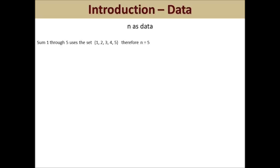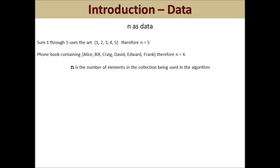It's just a coincidence that N equaled 5 and there are 5 elements, so let's look at another example. If we had a phonebook database full of contact names, our data set may contain Alice, Bill, Craig, David, Edward, and Frank. Therefore, N would equal 6 since we have 6 elements in our database collection. N equates to the number of elements in a set or collection being used in the algorithm.